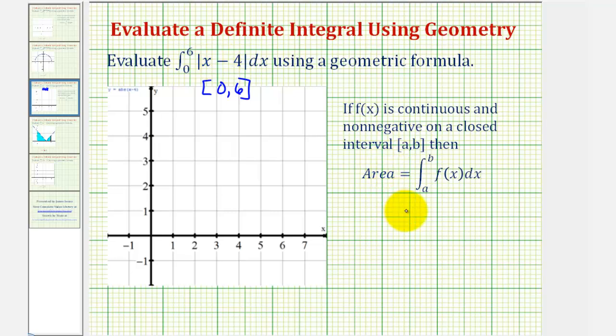Let's call our function y equals the absolute value of x minus four. The next thing to notice is that the function value will always be non-negative, and therefore, this means if we graph this function on this closed interval